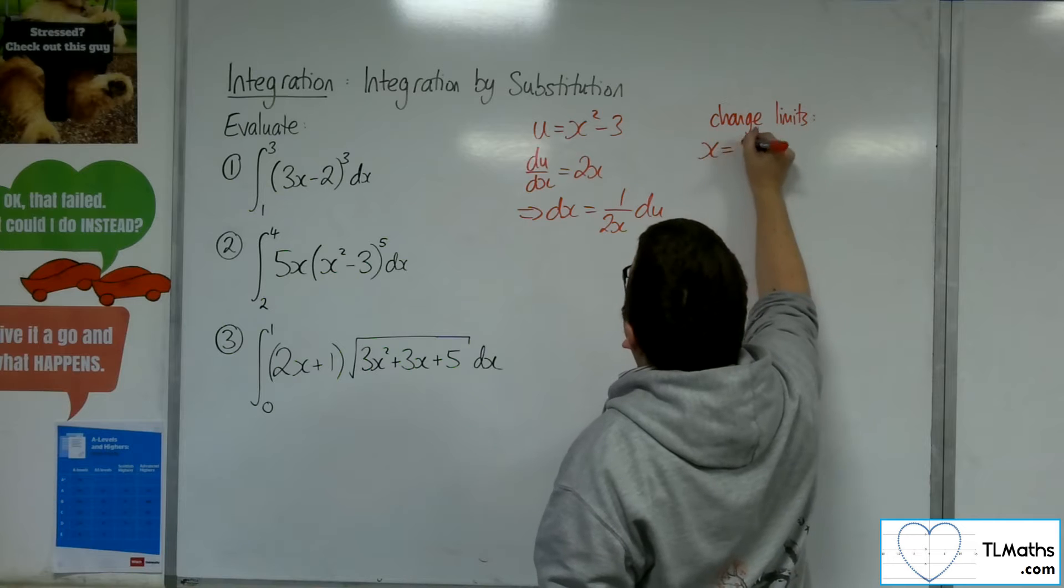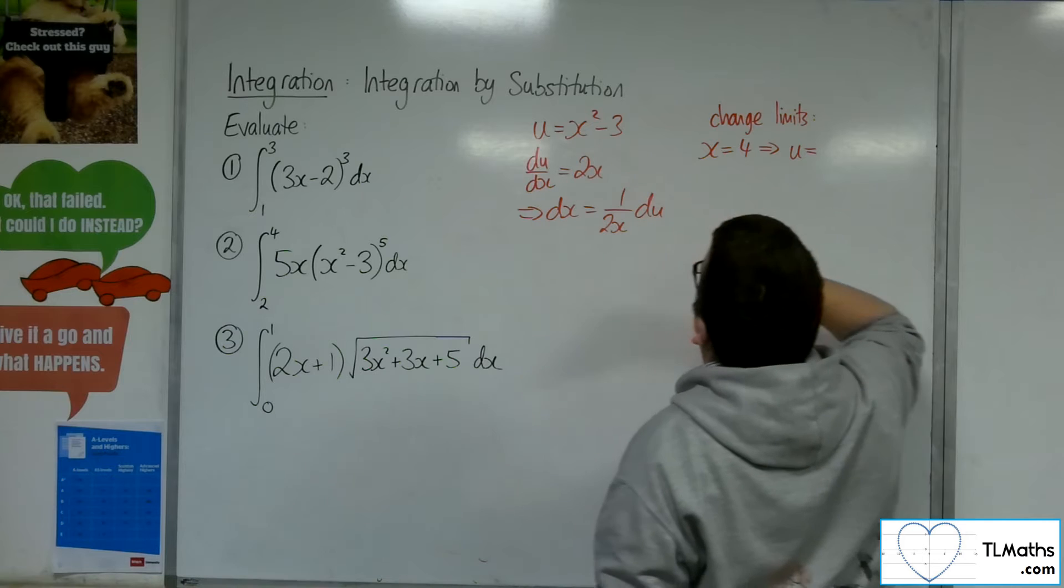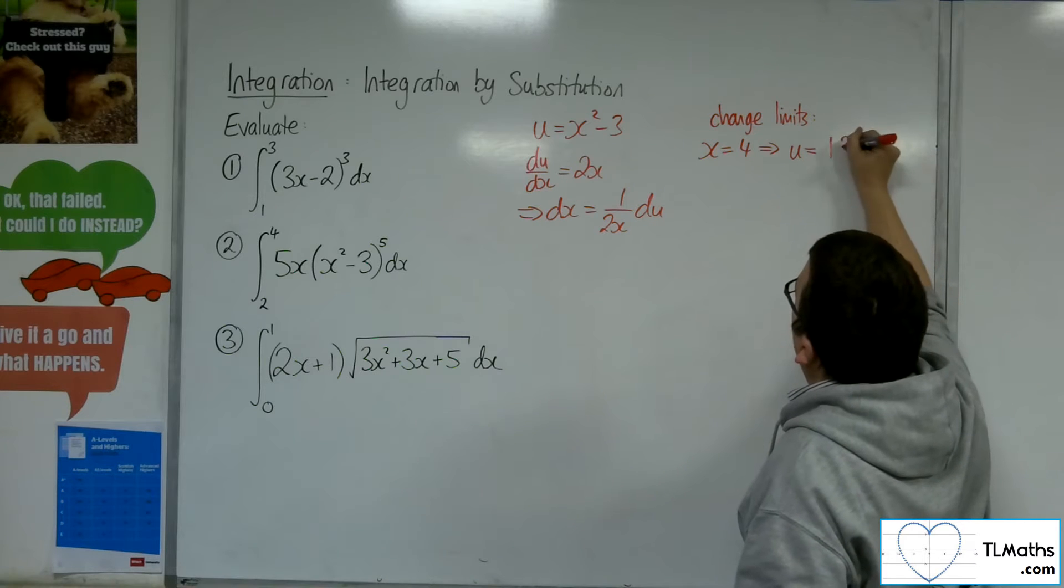So when x is 4, u is going to be 4 squared take away 3. So 16 take away 3, which is 13.